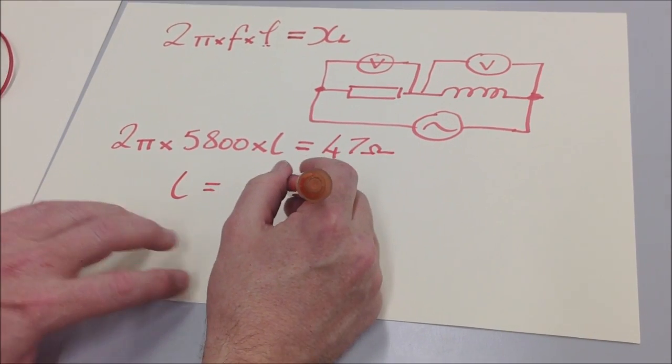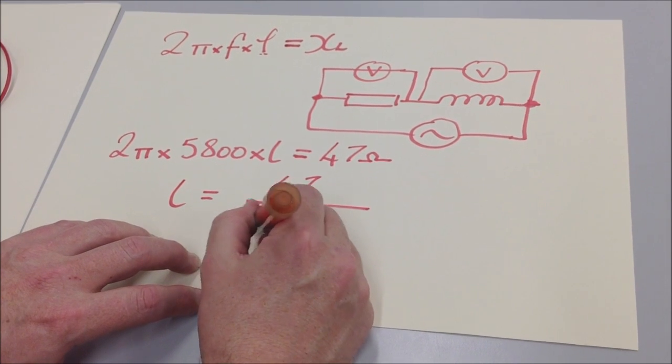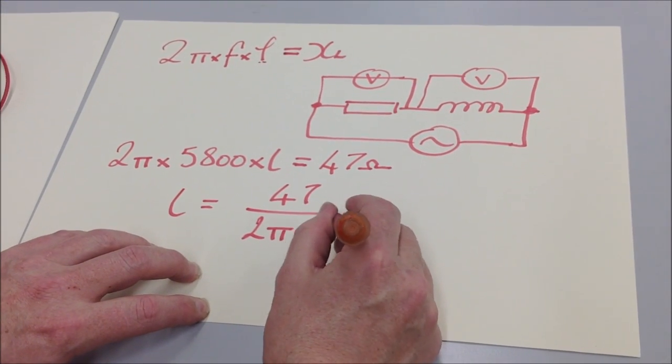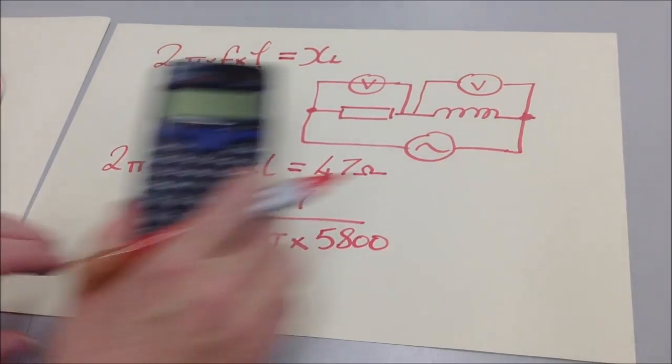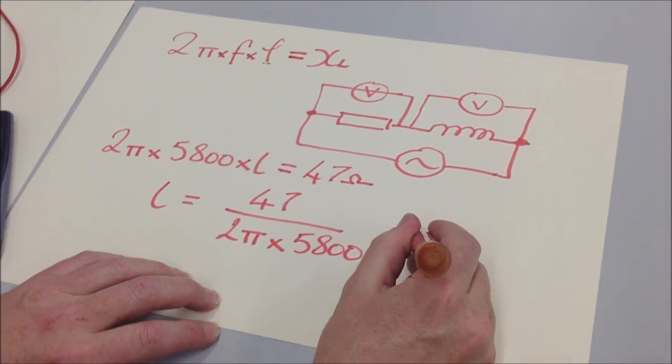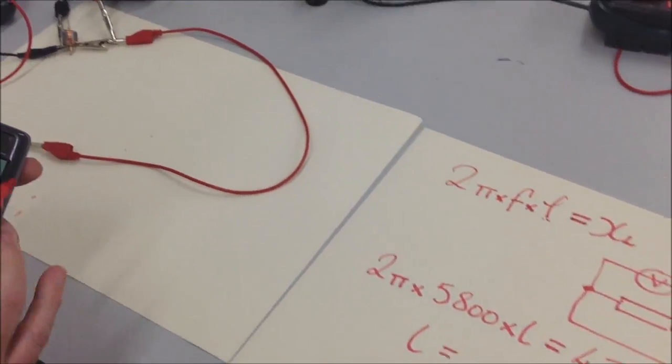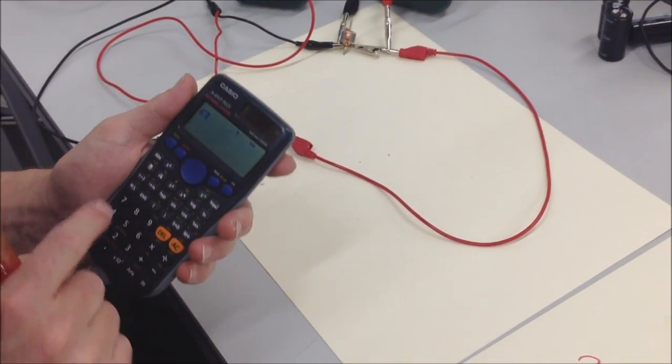So we can rearrange the formula there to find the inductance of the motor, and it's going to be 47 divided by 2 pi times 5,800. You pop all that into your calculator.